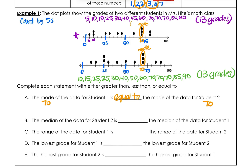Next is median — the middle. We cross off one from each side: crossing off pairs until we're left with the middle value. For student one, the median is 45. I'll circle that.